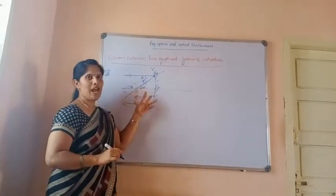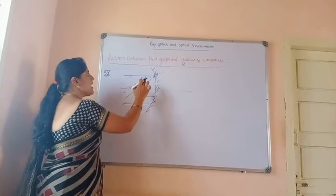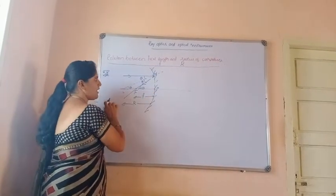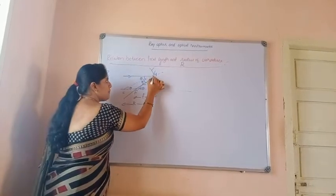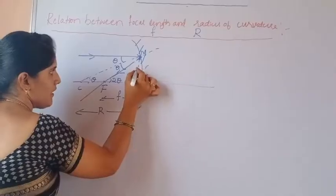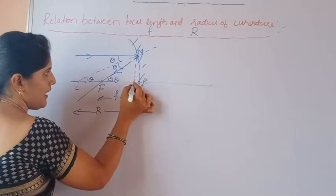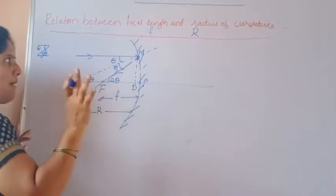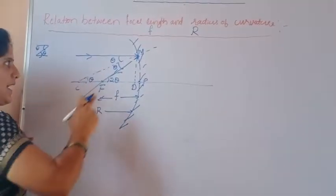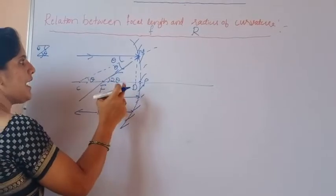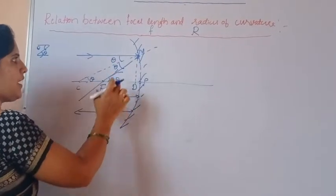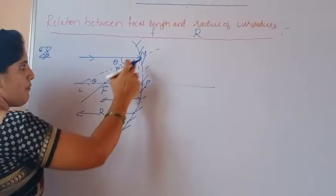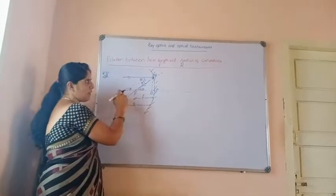Now we have two triangles. Let us draw a perpendicular line from point M; this foot of perpendicular is called D. We have two triangles: triangle MCD, used to derive R, and triangle MFD, used to derive F.